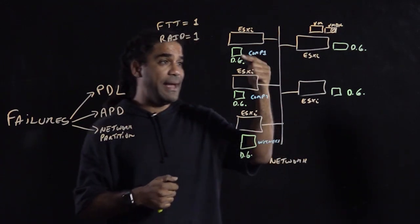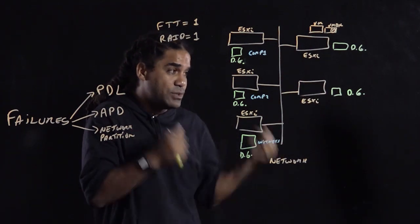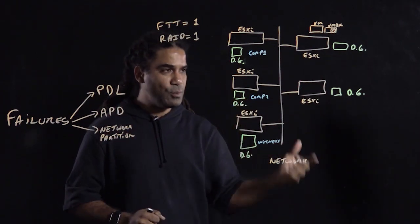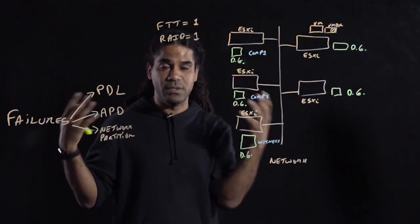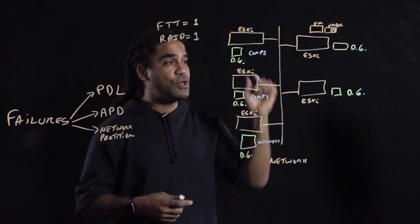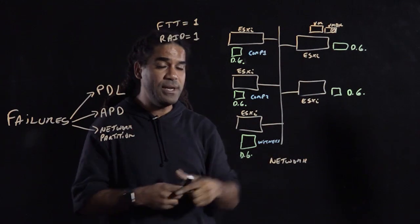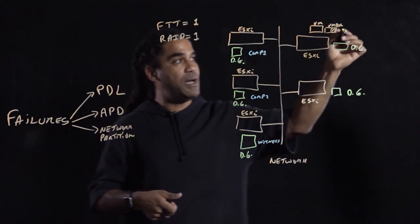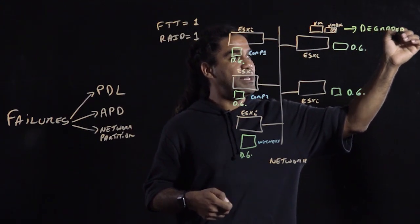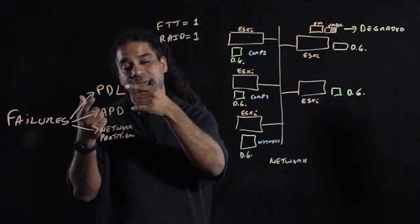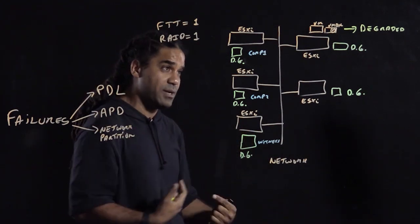No delay, basically. So when that happens, the source host immediately works with the vSAN cluster and goes, hey, I need another place to put that component because I have an SPBM of FTT1 and a RAID of one. So I'm not in compliance right now. So when that happens, for that moment of time where you don't have the second component, the object itself is in a degraded state. Anytime you hear degraded state in vSAN, that means that you're having a PDL situation and the cluster at this moment is working to recover that lost component.